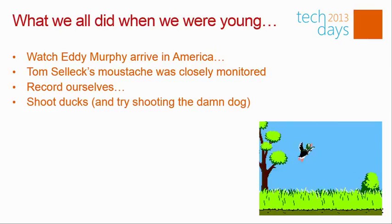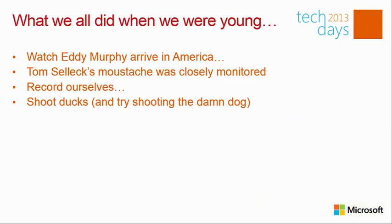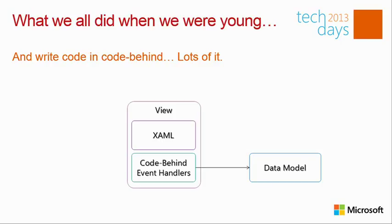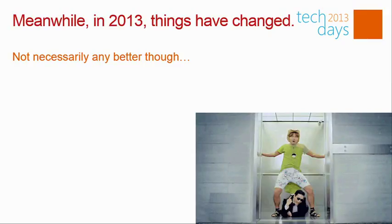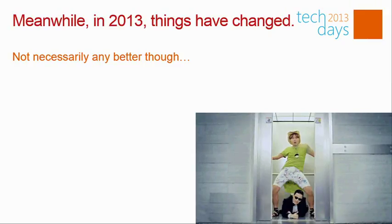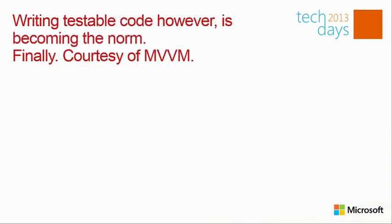We've been building applications in a less testable way for many years — the view contained XAML and code-behind, and that code-behind went directly to the data model. If you want to test code that lives in code-behind and contains regular event handling, it's very hard because that code is directly dependent on the view code, and UI elements are by definition very hard to mock out. In 2013 we became smarter and started doing things in a much better way.